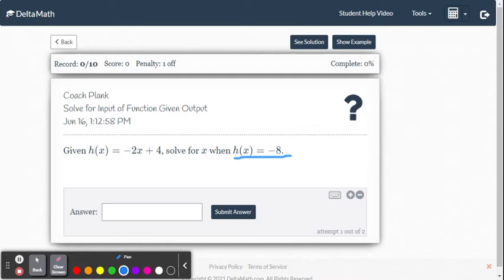They're giving us the output value and they want us to find the input value. So what is x going to be to get us to negative 8? All we do is replace h(x) with negative 8. So we're going to write negative 8 equals negative 2x plus 4.